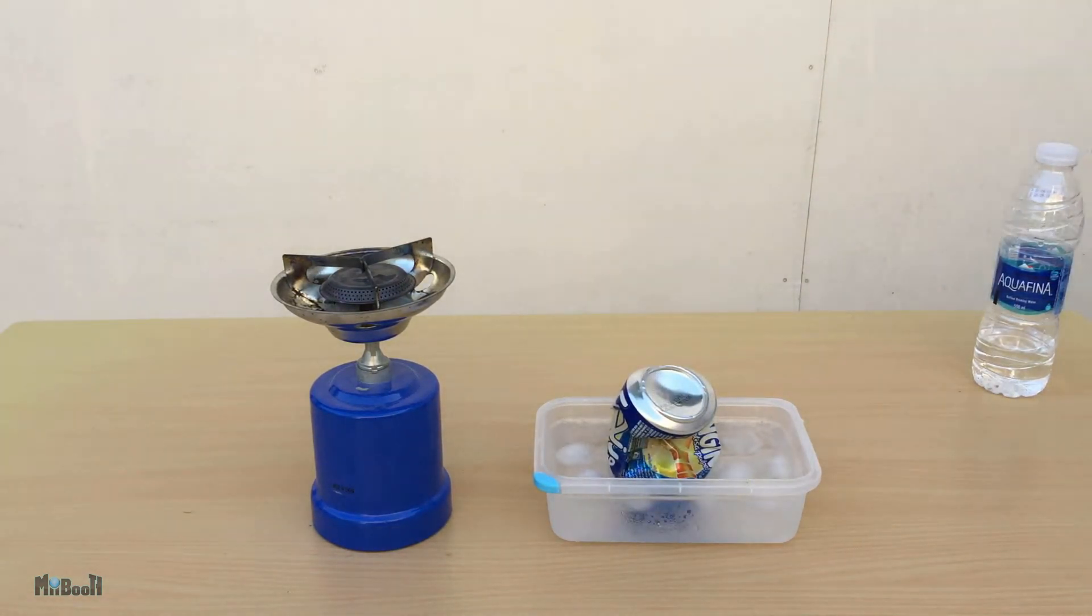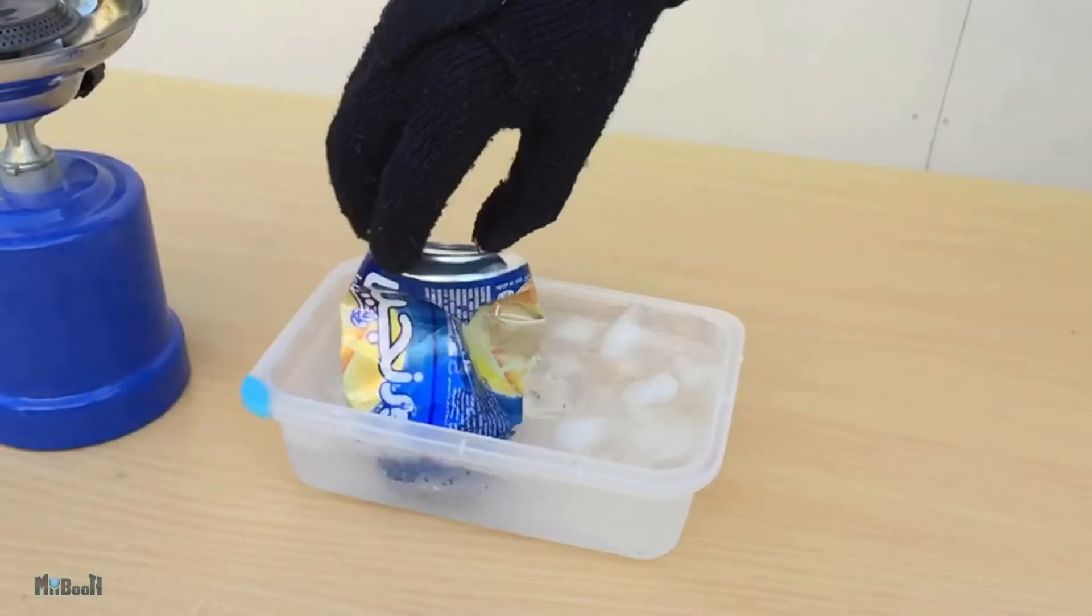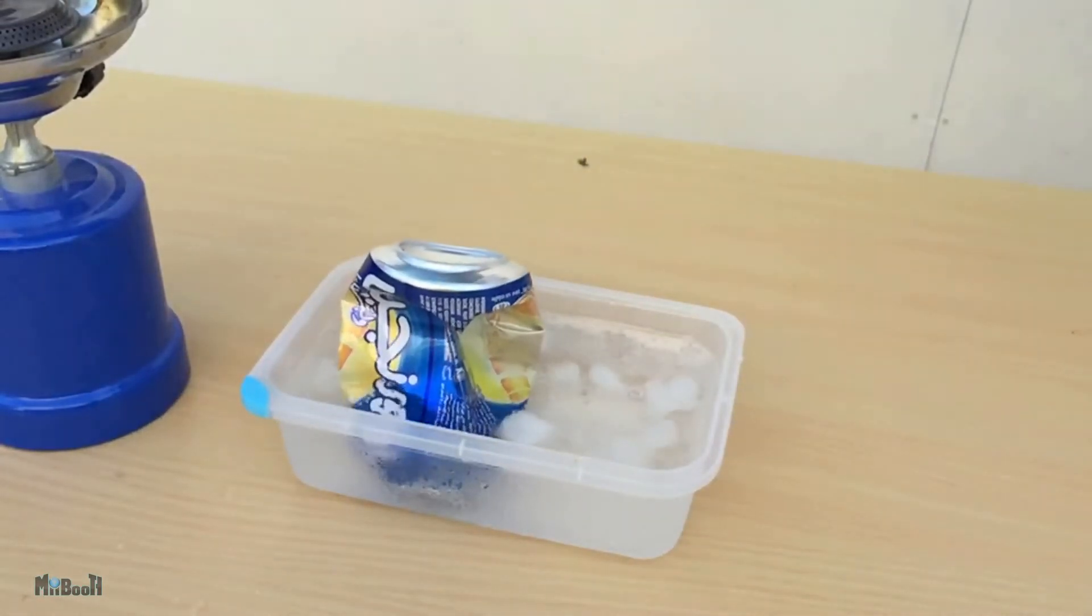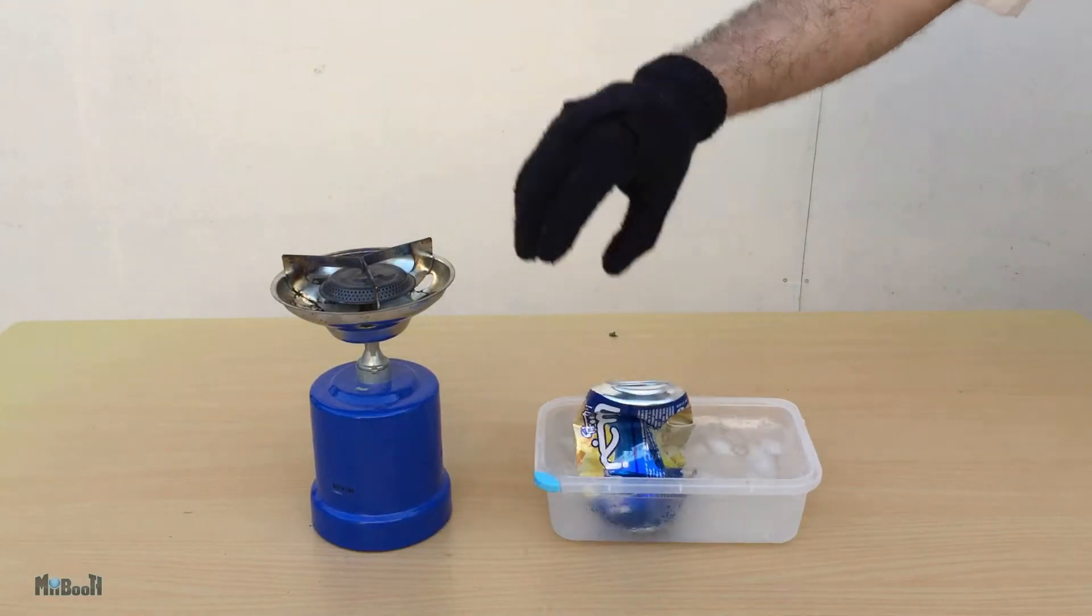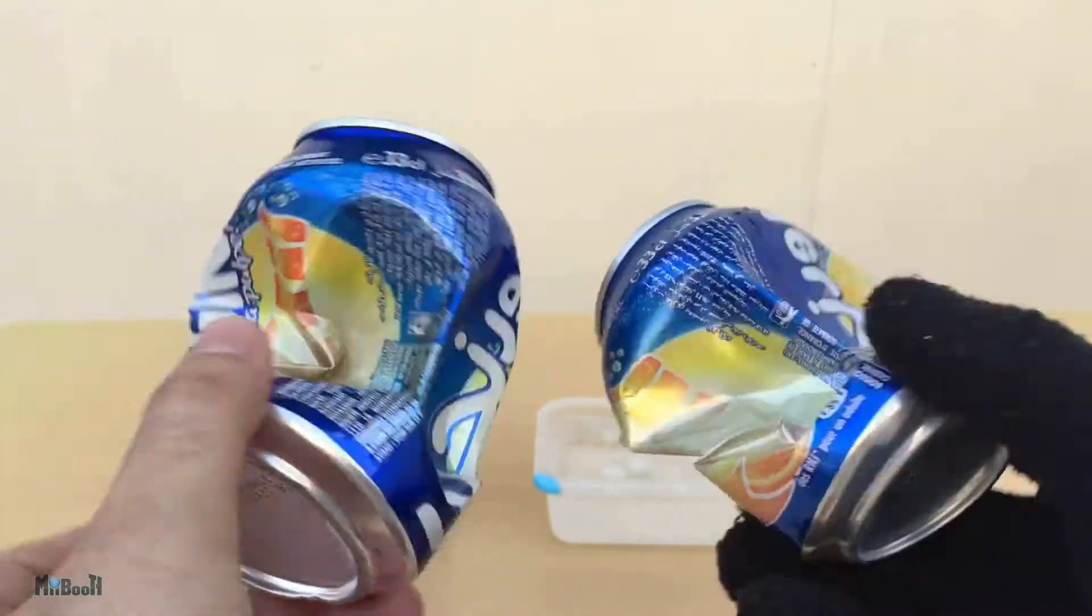Instantly, the can crumples on itself. The steam from boiling water fills the can completely. When dipped in cold water, the steam condenses which causes the pressure to fall drastically inside the can. The greater pressure outside causes the can to implode on itself.